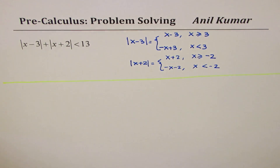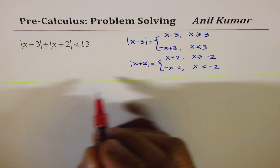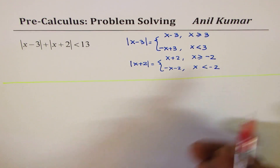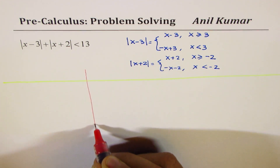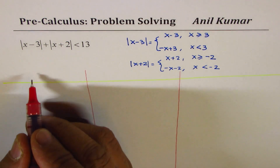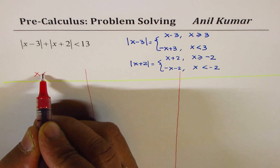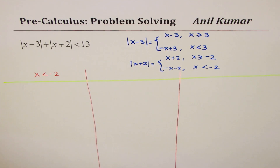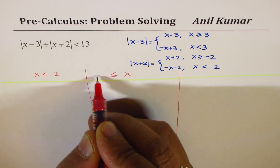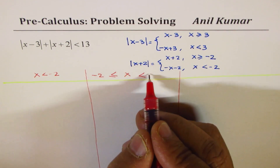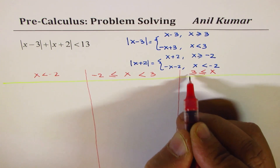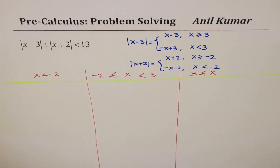We need three intervals: from negative infinity to −2, from −2 to 3, and from 3 to positive infinity. I'm going to divide the page into three portions. In the first interval x is less than −2, in the second interval x is greater than or equal to −2 but less than 3, and in the third interval x is greater than or equal to 3.